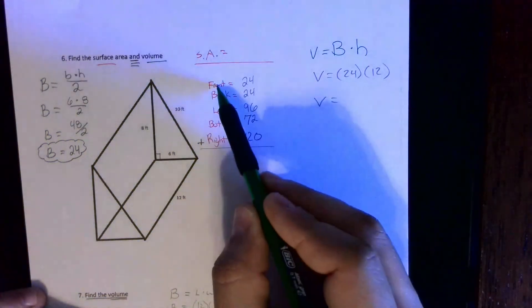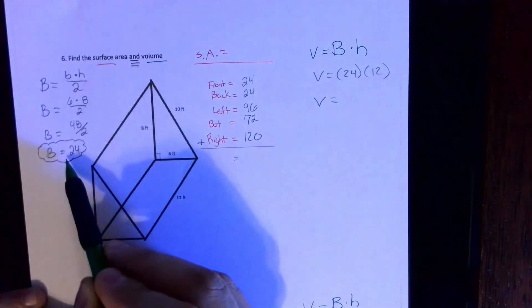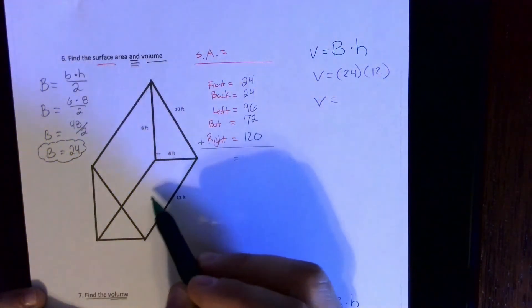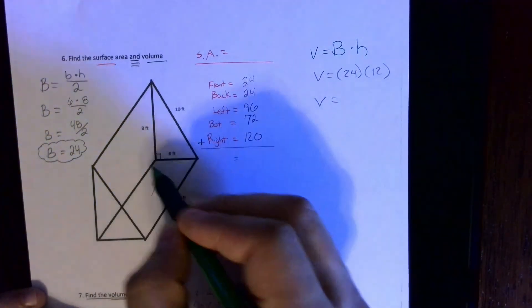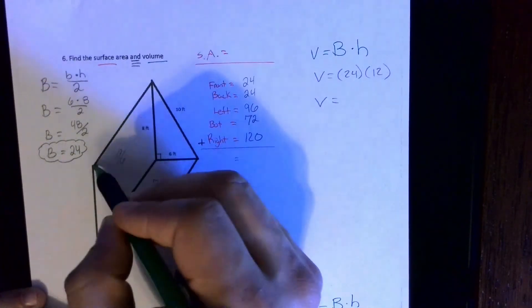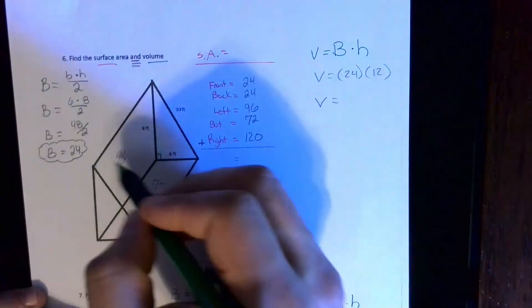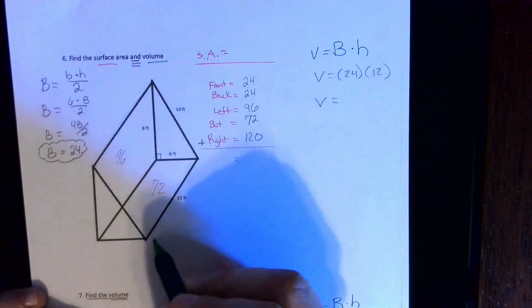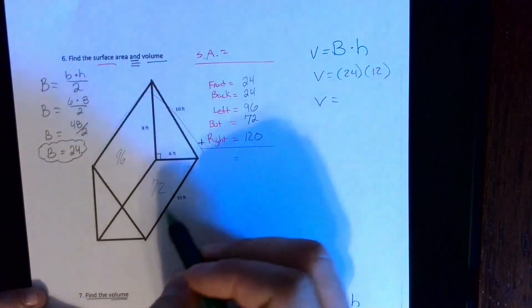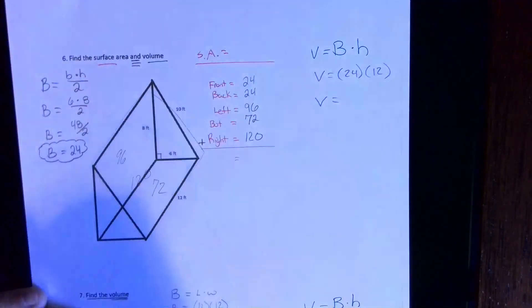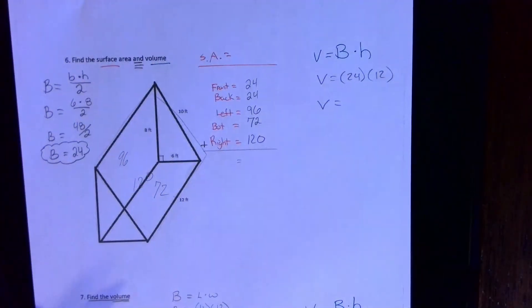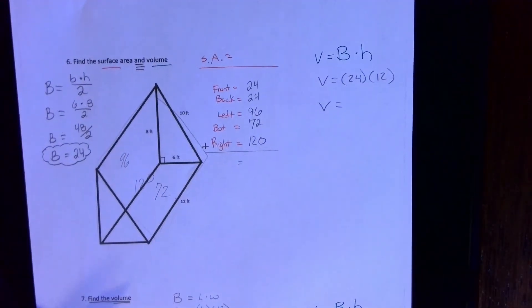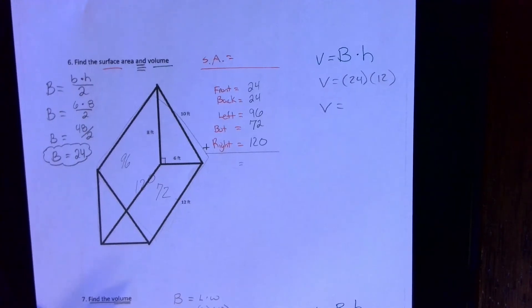The front and back were 24, the work is done right here. For the other sides, they're all rectangles: 12 times 6 is 72, 12 times 8 is 96, and this big rectangle here is 12 times 10, which is 120.